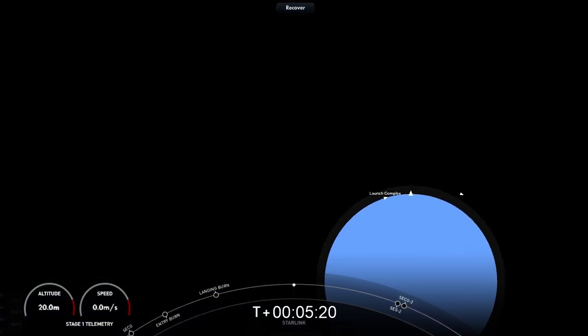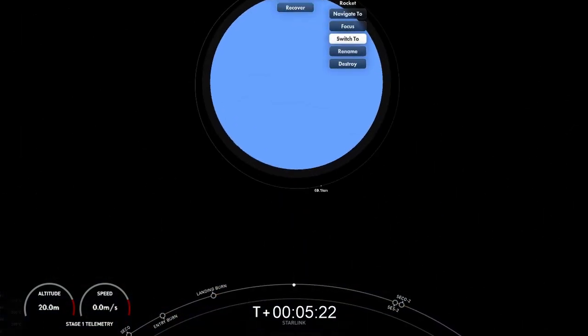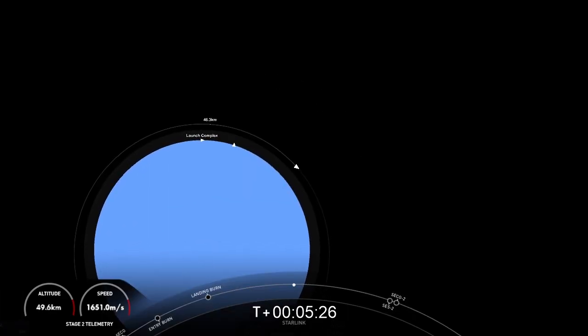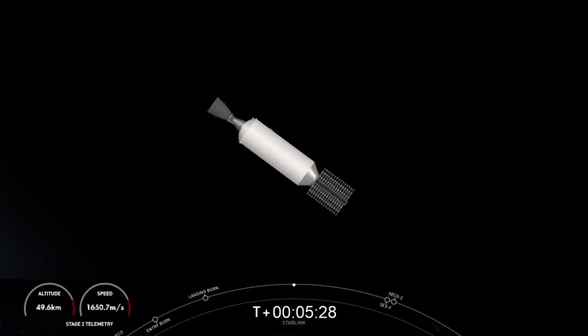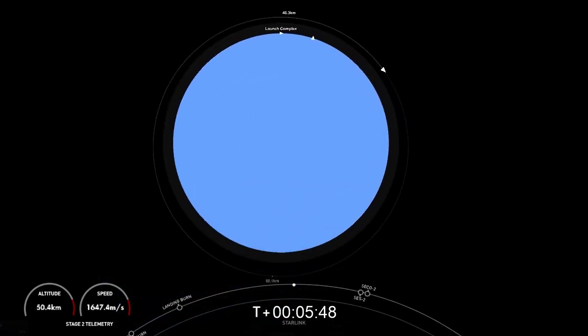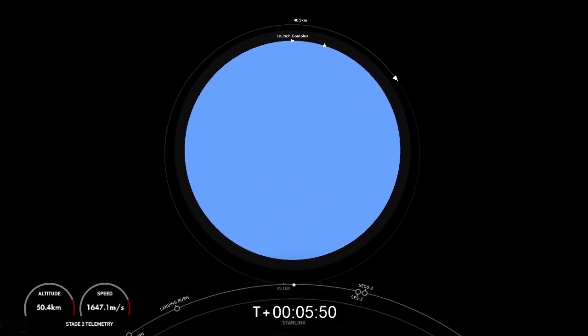So we did hear call-out for successful second engine cut-off of the Merlin vacuum engine. Nominal orbit insertion. So now the second stage with our satellites are in a coast phase. Next up is second engine start 2, also known as SES-2, and second engine cut-off 2, also known as SECO-2, which is scheduled to start around the T-plus 53-minute mark. From there, we're going to have payload deploy occur just after the T-plus 1-hour mark. Until then, we're going to take a short break, and we'll see you all back here in about 45 minutes. Until then, sit back and enjoy the space jams, and we'll see you soon.